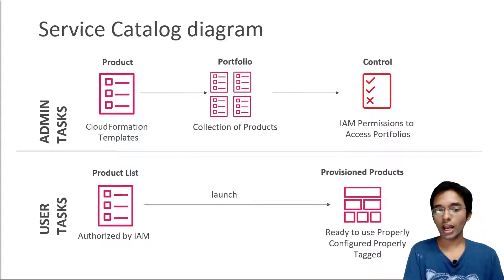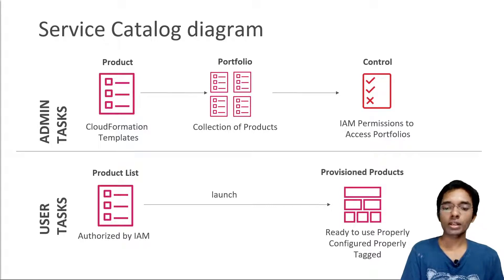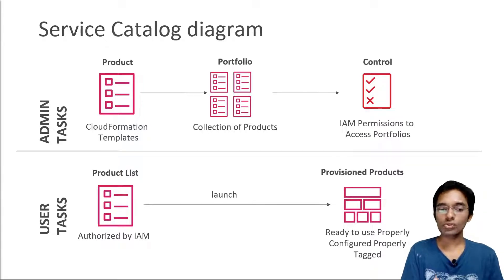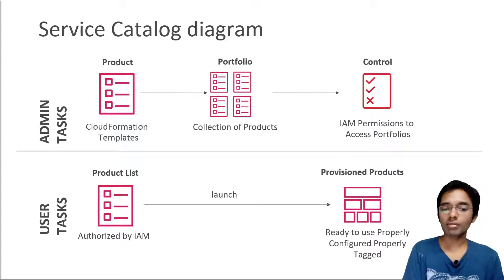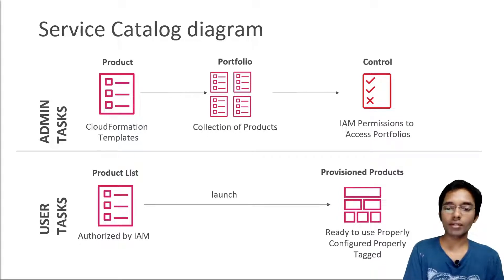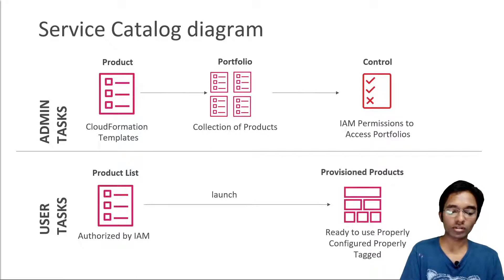That gives you provisioned products — they are ready to use, properly configured, and properly tagged. Think of Service Catalog as a set of CloudFormation templates that your users can use based on their IAM permissions. In this example, we don't give users the ability to launch CloudFormation templates themselves; we give them only the ability to launch the templates that admins have been given rights to define. The idea is that we are giving users less control, ensuring they can only do what they are authorized to do.